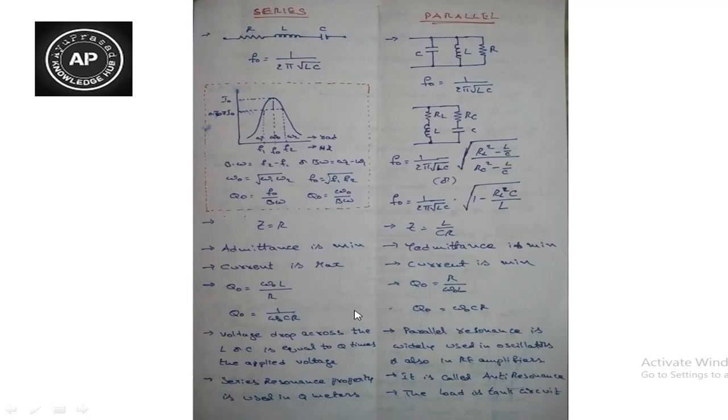In series resonance circuits, the voltage drop across the inductor or capacitor is equal to Q times the applied voltage. To find the voltage drop across L or C, multiply the quality factor by the applied voltage. The result is Q times applied voltage for both the inductor and capacitor.